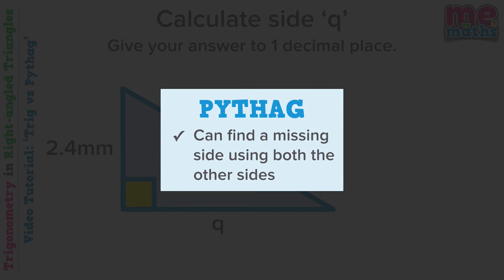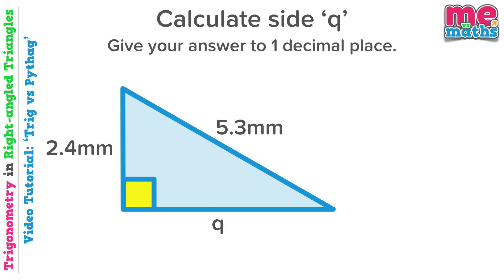So this is a Pythagoras question, because Pythagoras lets us find a missing side using both the other sides. We're looking for a shorter side. So if you've viewed our Pythagoras tutorials, you may be familiar with this panel at the bottom here: SSS short side subtract.